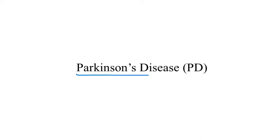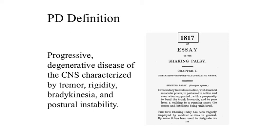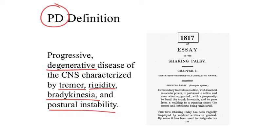This video will cover the pathophysiology of Parkinson's disease, which is characterized as a neurodegenerative disease as well as a movement disorder. Parkinson's disease, or PD for short, is defined as a progressive degenerative disease of the central nervous system, characterized by the cardinal symptoms of tremor, rigidity, bradykinesia, and postural instability. These characteristics of PD have been recognized for over 200 years.